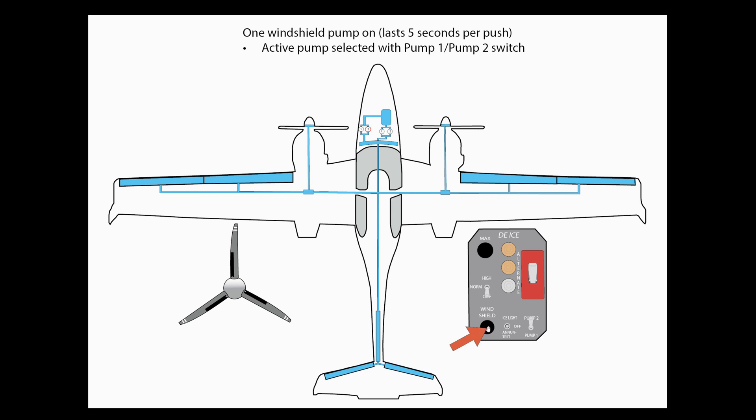The way you use this system is just with a button push. You have this windshield button right here. You press that and it is active for five seconds every time you push it. So it's kind of just a temporary push. It sprays for five seconds and then you keep doing that as much as you need. There are also two pumps here, and in this case, you can see that pump number two is active. That is also selected with this pump one, pump two switch.